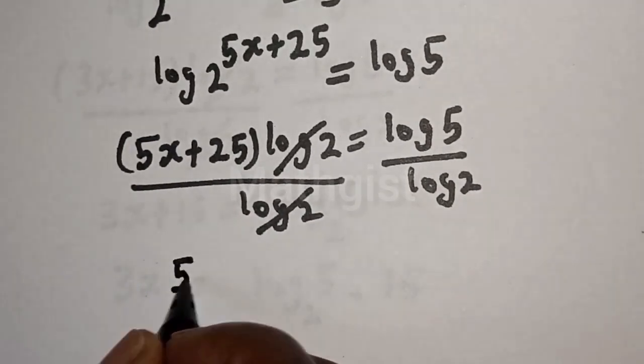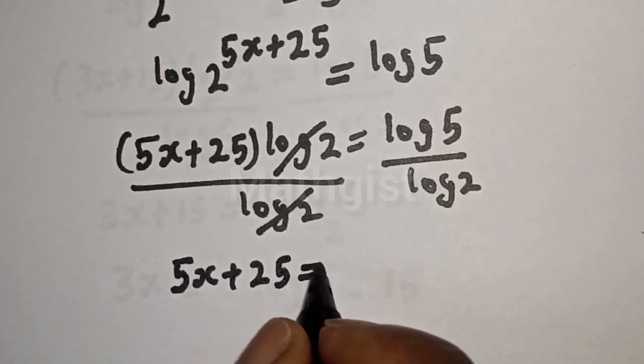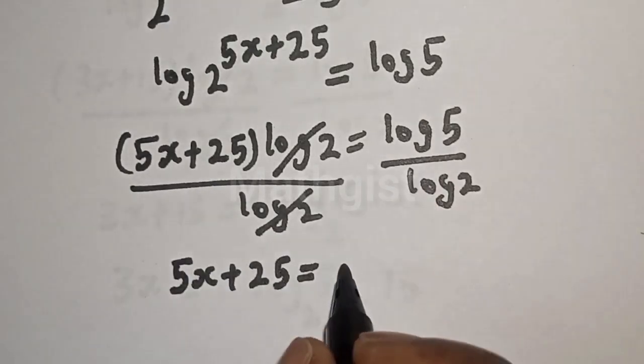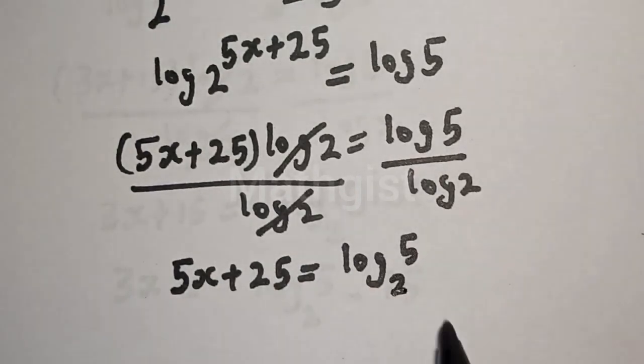We have 5s plus 25 is equal to log 5 over log 2, which can be written as log 5 base 2.